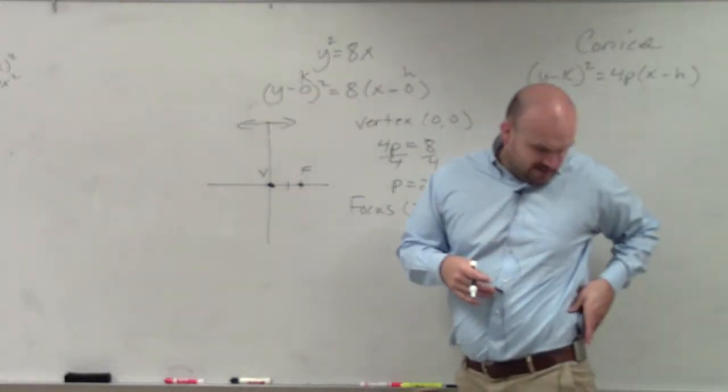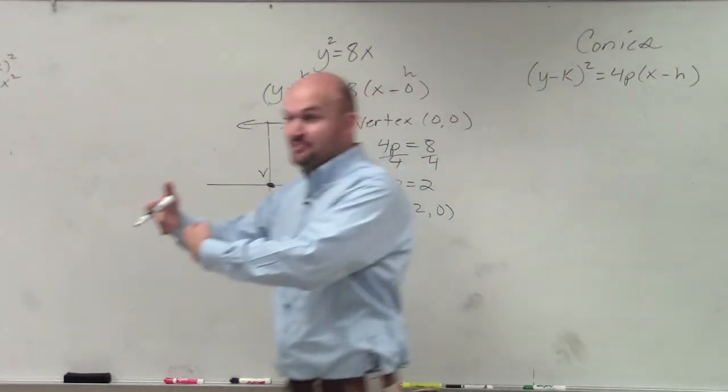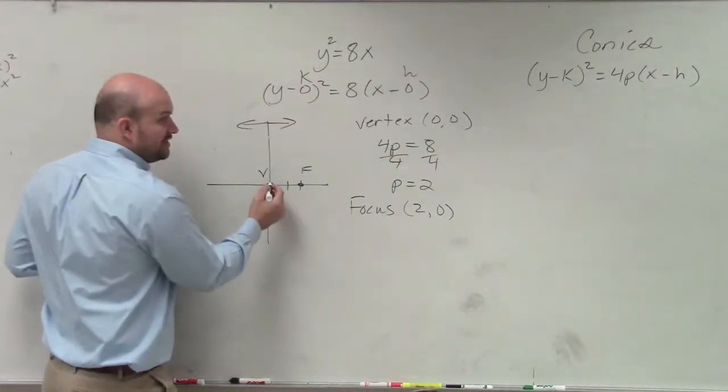And then the next thing you need to figure out is my directrix, which is the opposite of p. So that's going to be 2 units to the left.